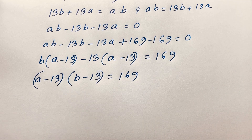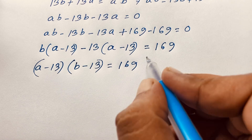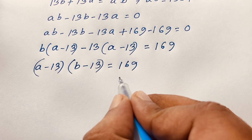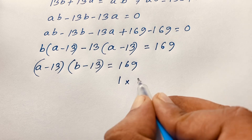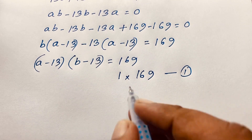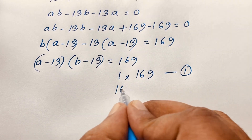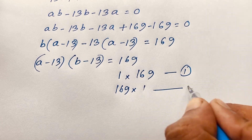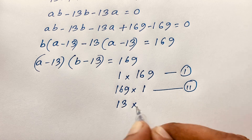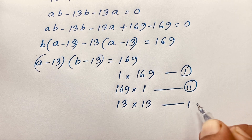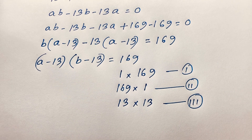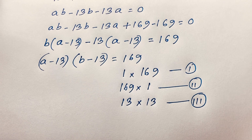We know a and v are positive integers, so we find the factor pairs of 169. These are: 1 times 169 (first case), 169 times 1 (second case), and 13 times 13 (third case). So we have three cases to consider.